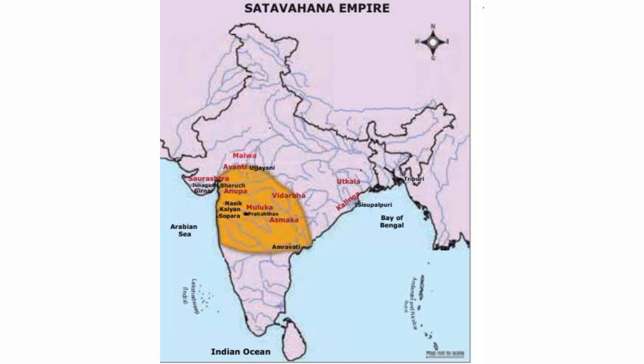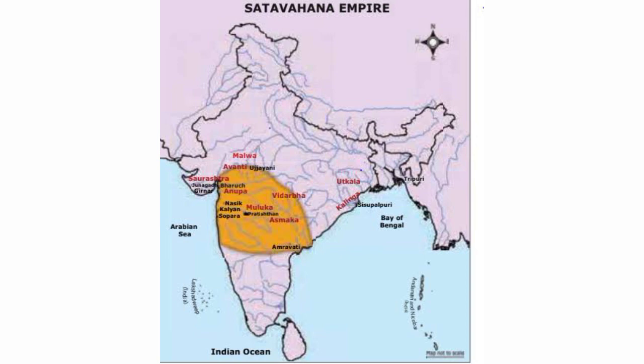Officers were appointed to look after these provinces. Each province had its own officer to oversee it. Cities and villages were looked after similarly, and self-governing institutions existed at that time.